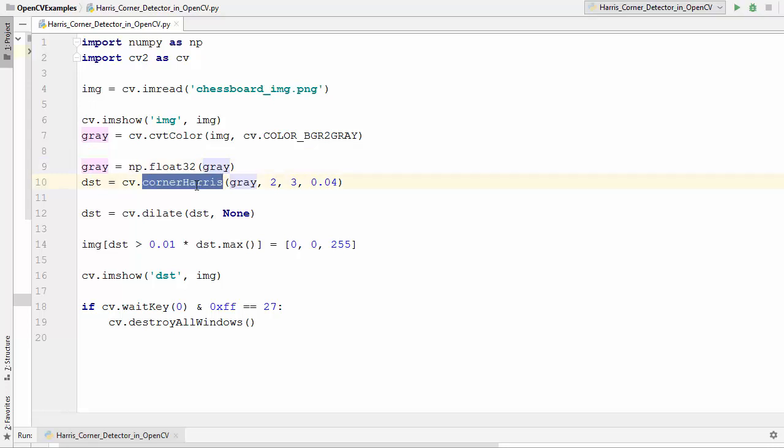That's why we need to convert our image into float32 format using np.float32 to convert this image into floating point values, because our cornerHarris method which we're going to use in the next step is going to take this kind of value and not the value which comes directly from the conversion of this image to grayscale.